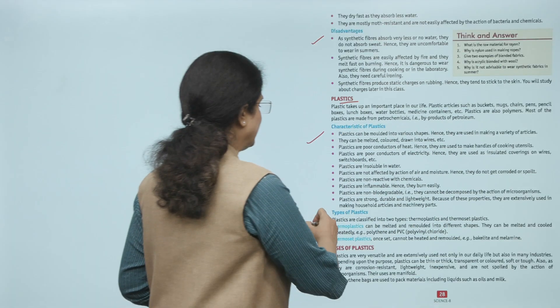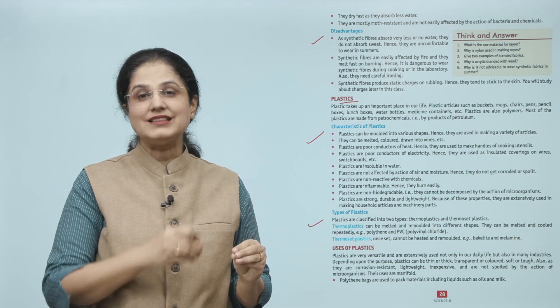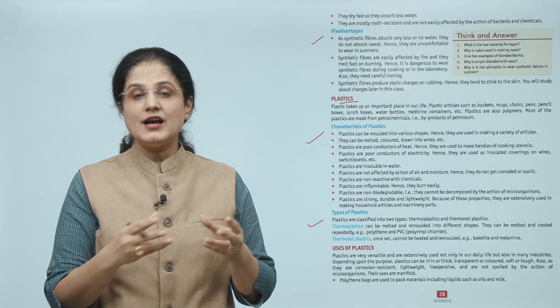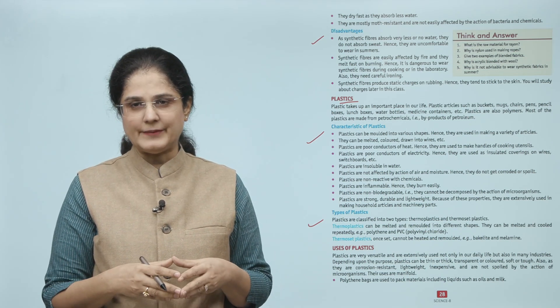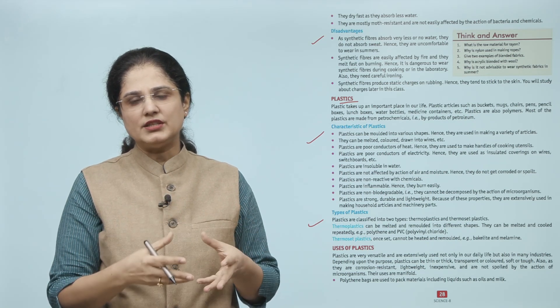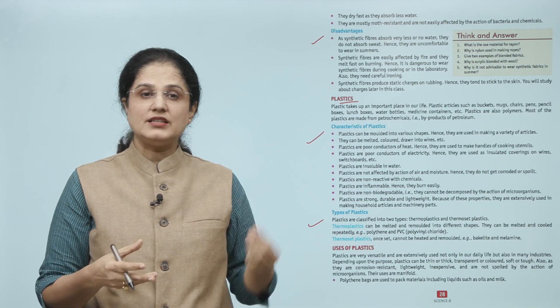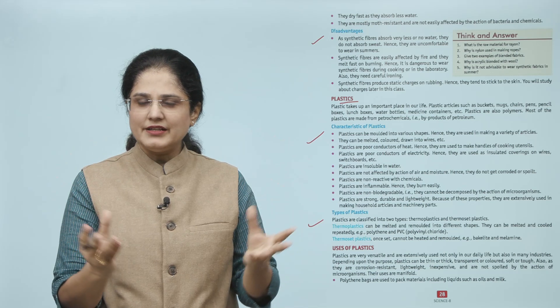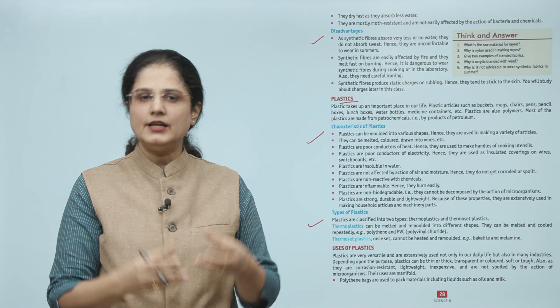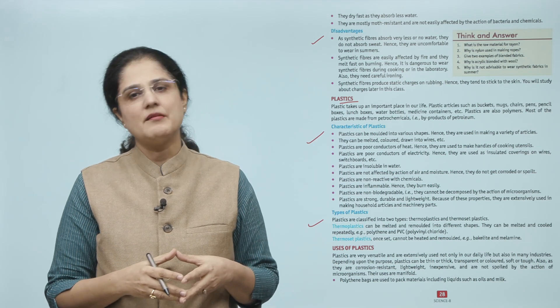Now let us look at the types of plastics. Plastics are of two types: thermoplastics and thermoset plastics. Thermoplastics can be easily melted and remolded into different shapes. They can be melted and cooled repeatedly. Examples are polythene and PVC, which is polyvinyl chloride. Then we have thermoset plastics. Once they are set into a shape, they cannot be heated and remolded again. Examples are bakelite and melamine.